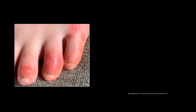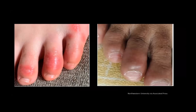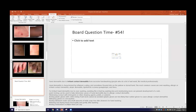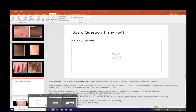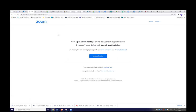COVID toe is another example — very striking in lighter skin, much more subtle in a darker, more pigmented skin. We're going to jump to a board question.